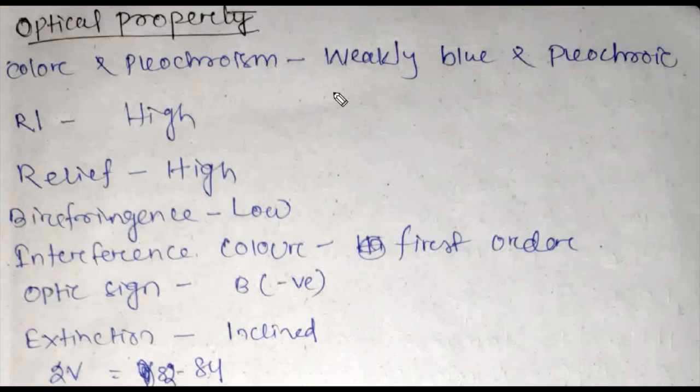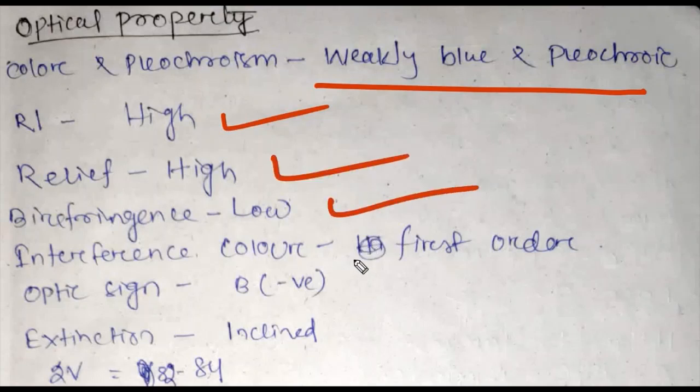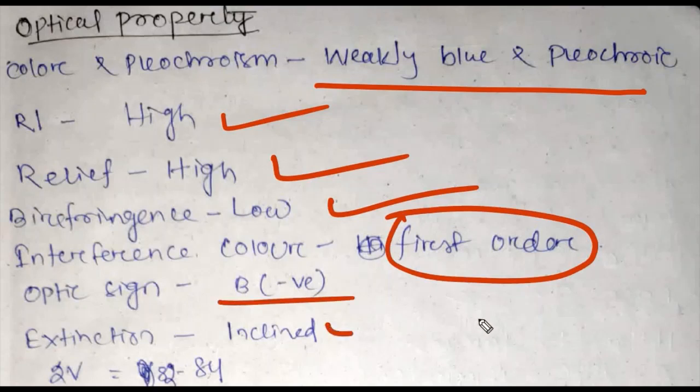Optical property: Color and pleochroism is weakly blue and pleochroic. Refractive index is high, relief high, birefringence low. Interference color is first order. Optic sign is biaxial negative. Extinction is inclined. 2V angle is 82 to 84 degrees. 2V angle is the angle between two optic axes.